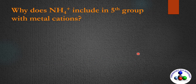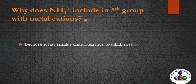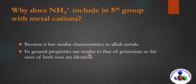Now for the next question: why does the ammonium ion appear in the fifth group with metal cations? Because the ammonium ion has similar characteristics to the alkali metals, and its general properties are similar to those of potassium, as the size of both ions are identical.